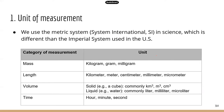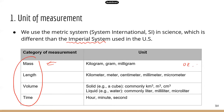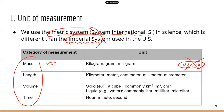We have different categories of measurement, and for each category we use different units. One thing you need to be careful about is that in the US we use the imperial system — for example, for measuring mass we use units such as ounce or pound. However, in the scientific world we do not use the imperial system. We use the metric system, and in fact most countries in the world use the metric system. The metric system is also known as Système International, abbreviated SI.